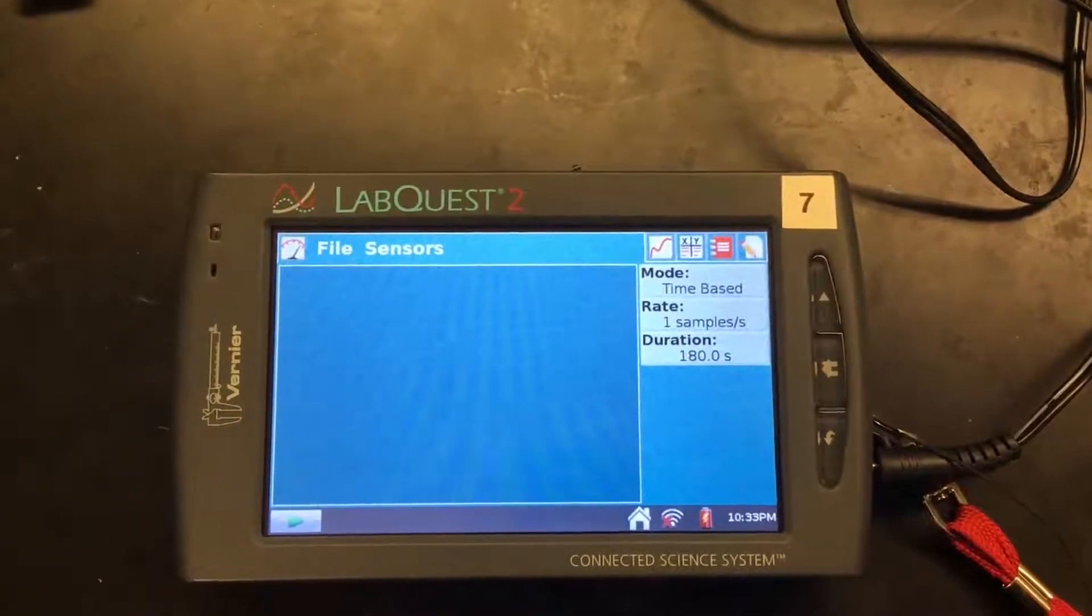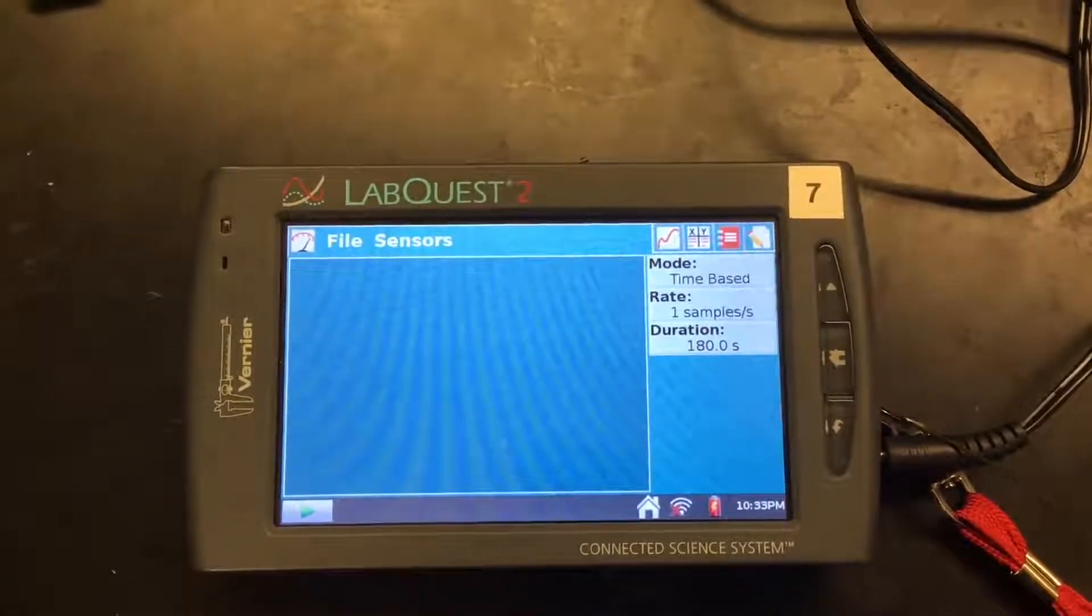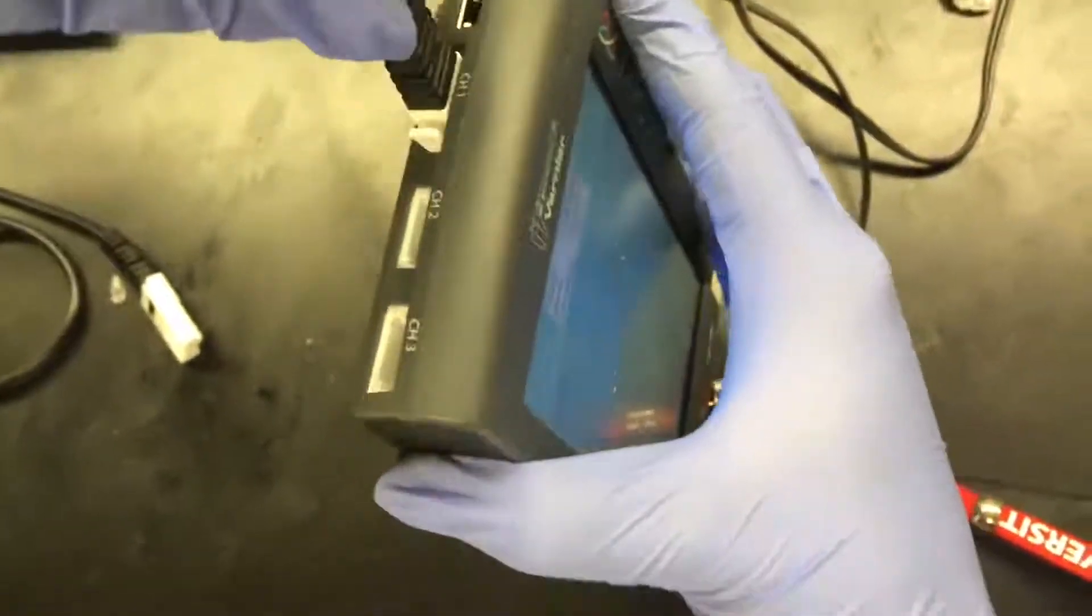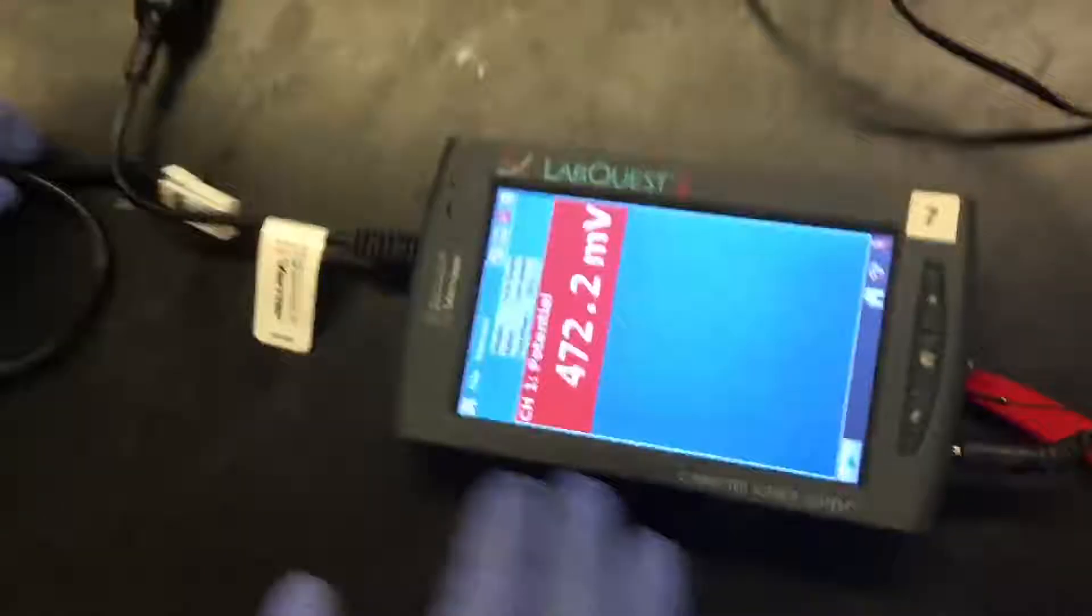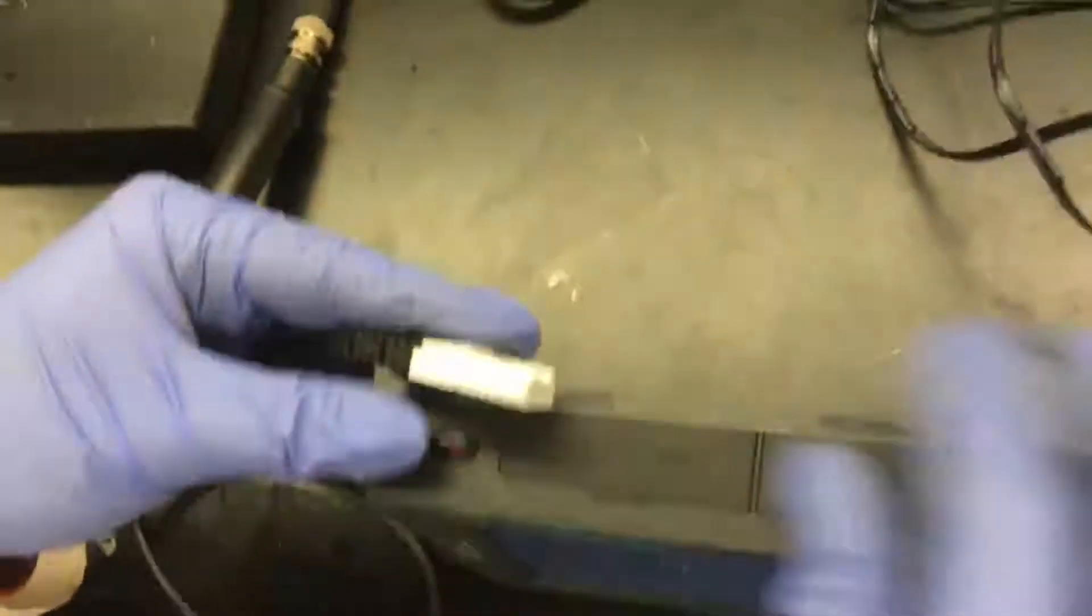This is the Vernier system that we will be using. Eilish is going to plug in first the redox probe, which is similar to the pH probe that you will be using. It's in channel 1. And then she's going to be plugging in the drop counter, which goes into digital 1.